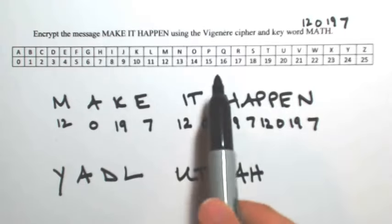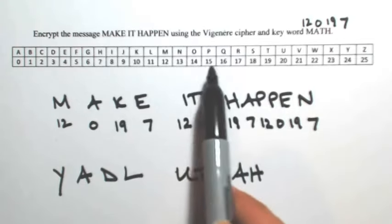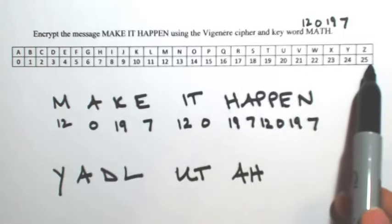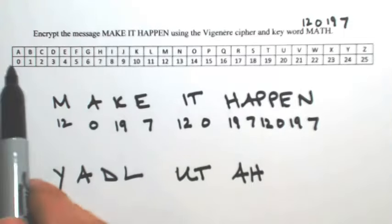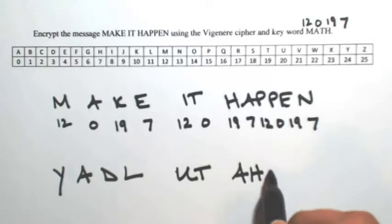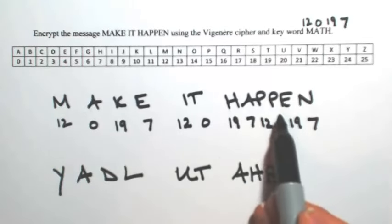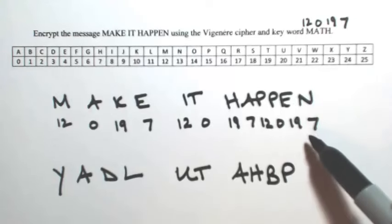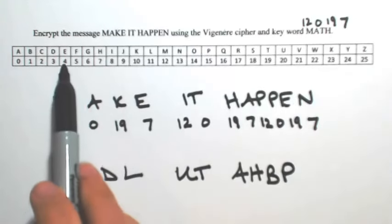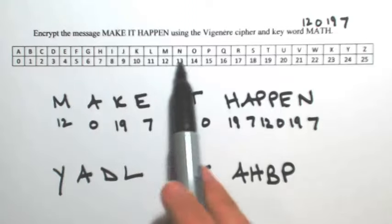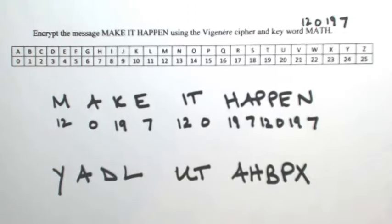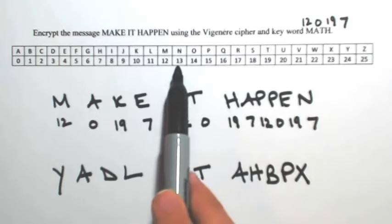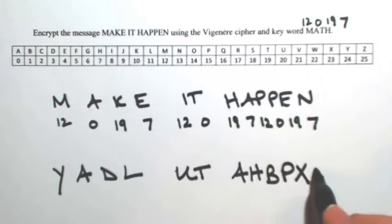P is shifted by 12; P is 15, and adding 12 goes past 25, so counting up: 10, 11, 12 — that gives B. The next P gets shifted by 0, so it stays the same. E is shifted by 19; E is 4, add 19 gives 23 — so that's an X. And N is shifted by 7; N is 13, add 7, you get 20, so that's a U.